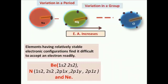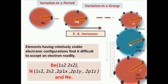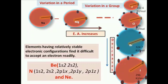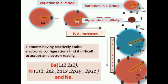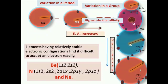The trend down the group: if we move down the group in a periodic table, electron affinity decreases. However, comparing fluorine and chlorine, the electron affinity of chlorine is more than that of fluorine, because due to the small size of fluorine, it is difficult to add an electron into the fluorine atom. So chlorine is the atom with the highest electron affinity.